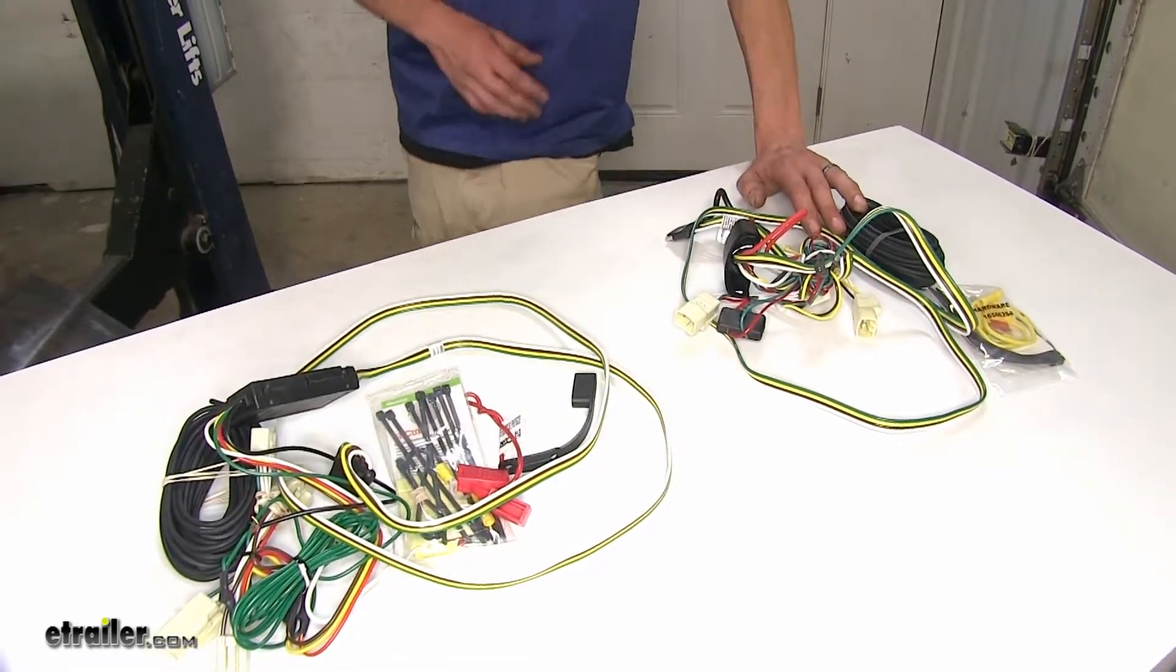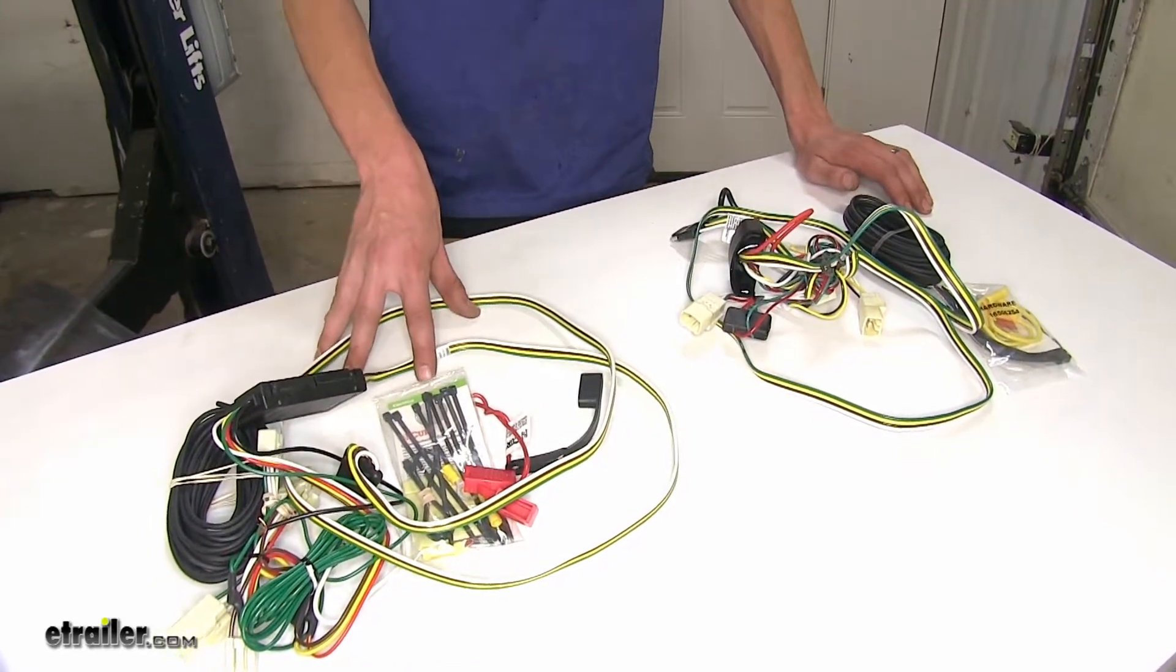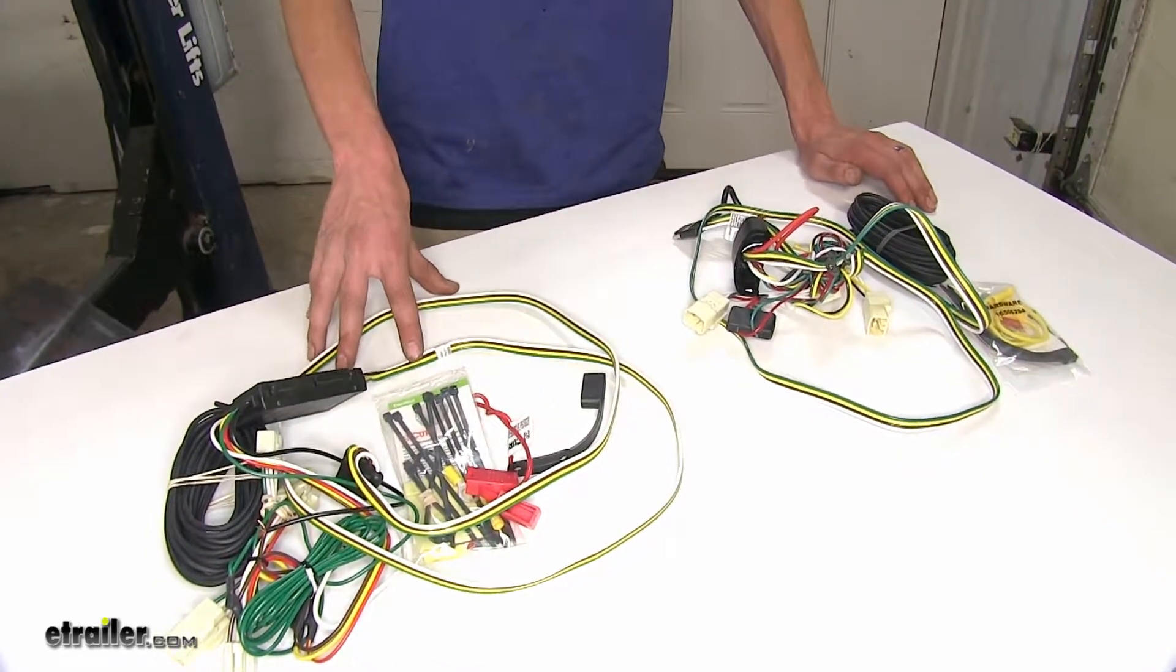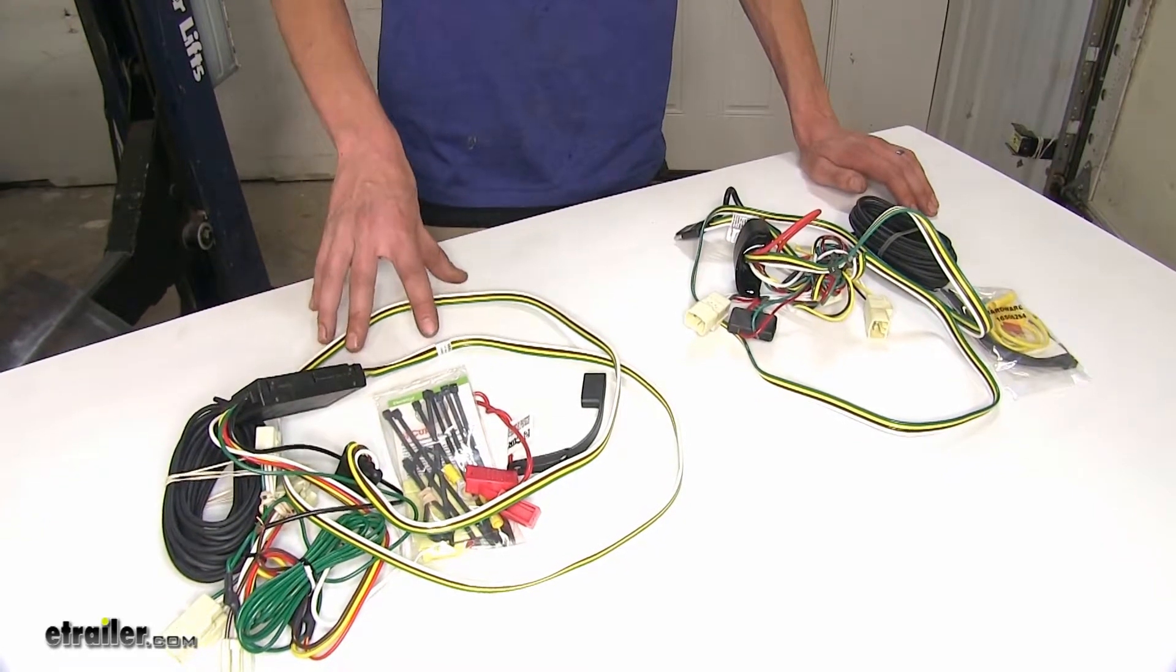So as you can see, our Curt T-Connector puts out a little bit more power, which will be useful if you're towing a trailer which has a lot of lights on it. Just something to keep in mind.